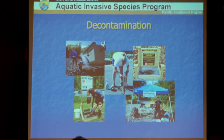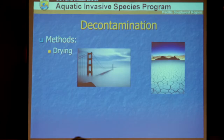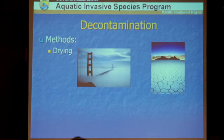Decontamination: once your inspection program finds something, you need to clean it. The first method is drying. How effective is that? It depends on your region — in the Bay Area where it's foggy and damp, drying doesn't work well. But in a dry area like Death Valley or Lake Piru, drying may work just fine.